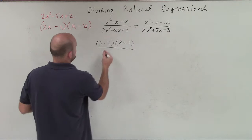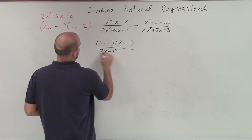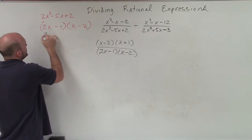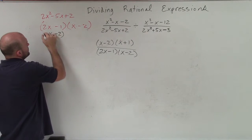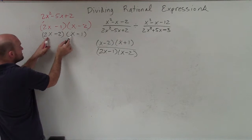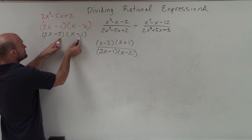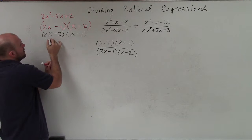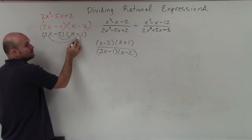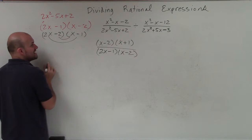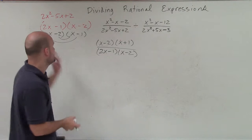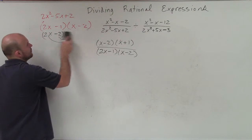So I'll write that in there: 2x minus 1 times x minus 2. The other factor form we could have had was 2x minus 2 times x minus 1. That doesn't work because when we add our outer and inner — 2x times negative 1 is negative 2x, and negative 2 times x is negative 2x — which gives negative 4x, not negative 5x. So that's why that does not work.